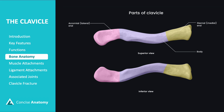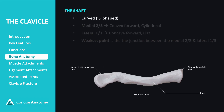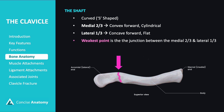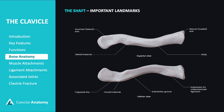The clavicle consists of three parts: a shaft and two ends, medial and lateral. The shaft of the clavicle has a gentle S-shaped curve. Its medial two-thirds is cylindrical and convex forwards, while the lateral one-third is flat and concave forwards. The weakest point of the clavicle is at the junction between the medial two-thirds and the lateral one-third. The superior surface of the shaft is smooth and subcutaneous between the attachments of the deltoid and trapezius muscles, and it has the deltoid tubercle. The inferior surface contains the conoid tubercle and trapezoid ridge, providing attachments for the conoid and trapezoid parts of the coracoclavicular ligament.